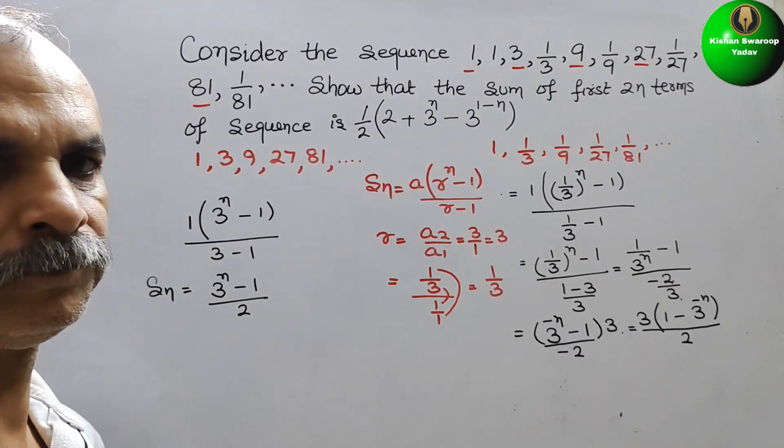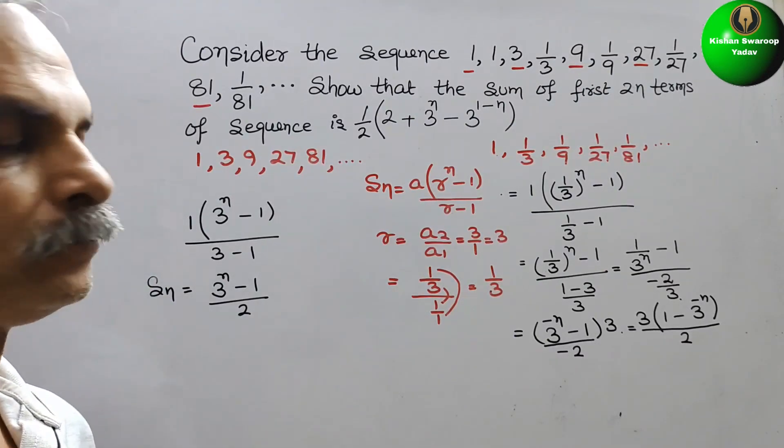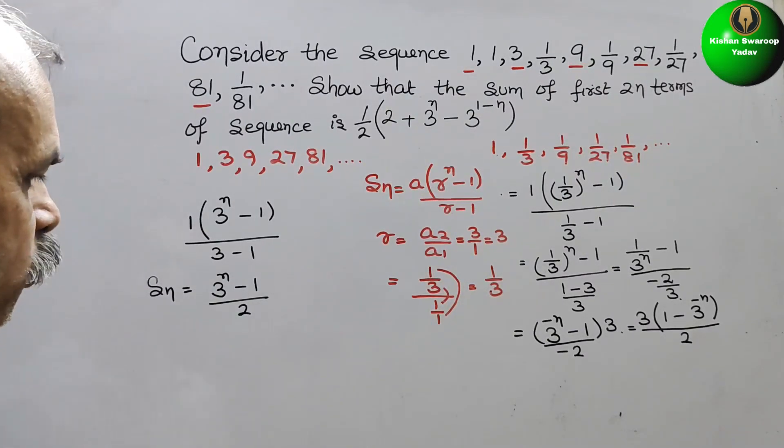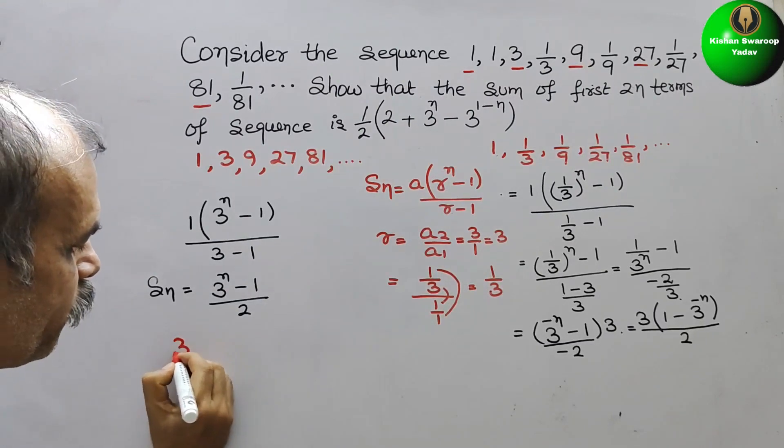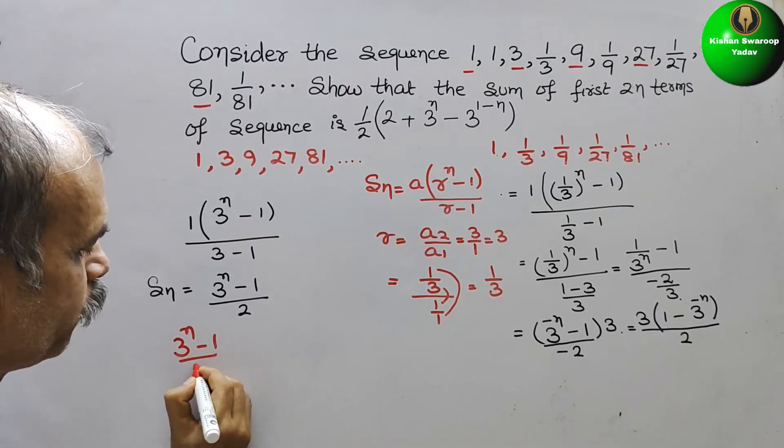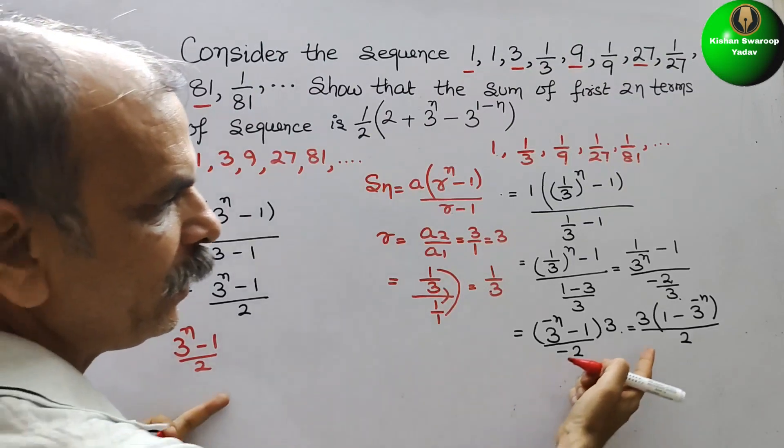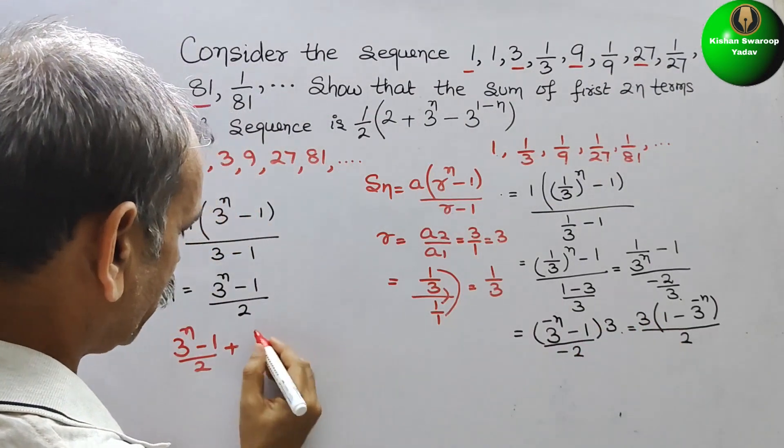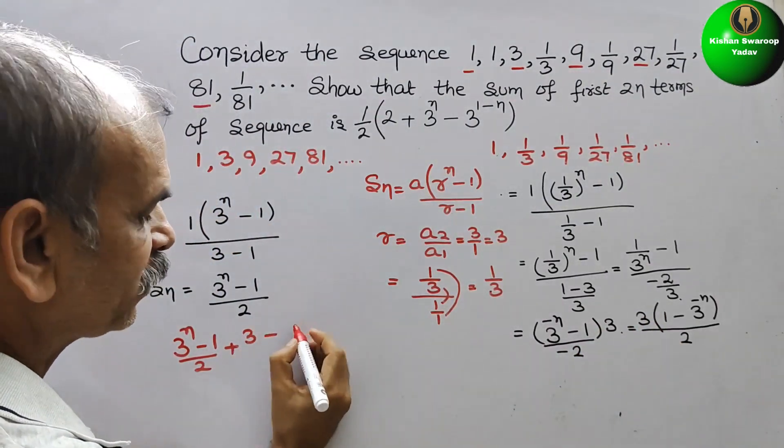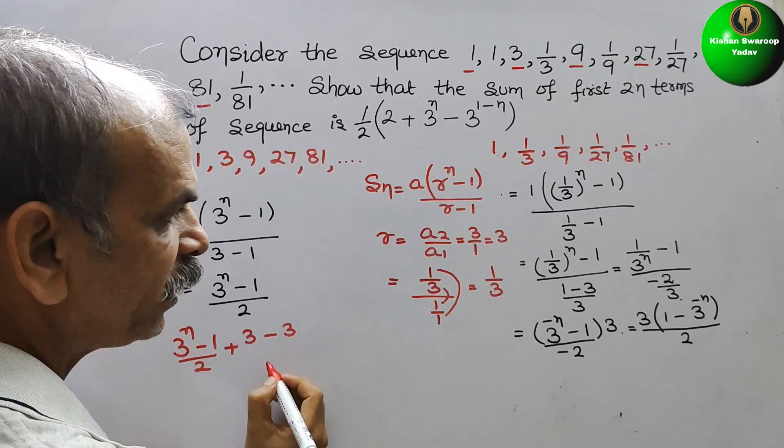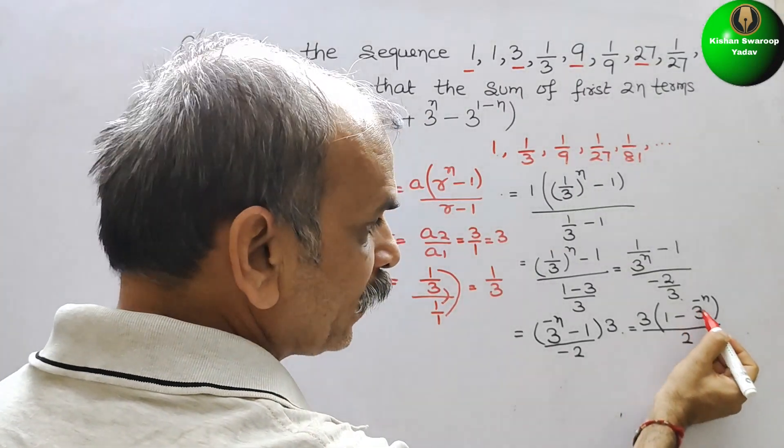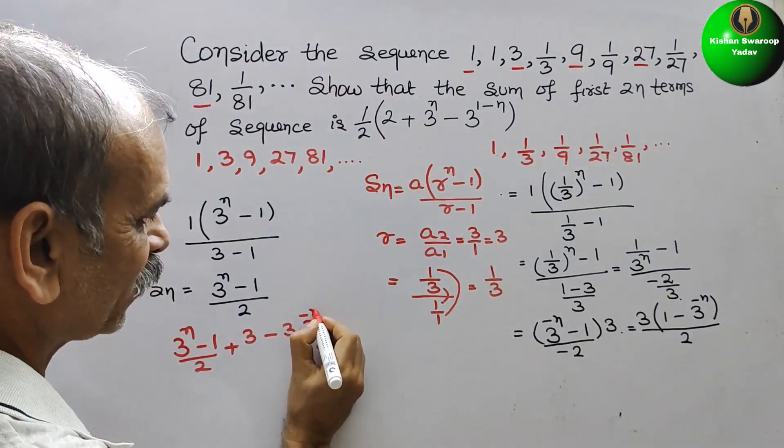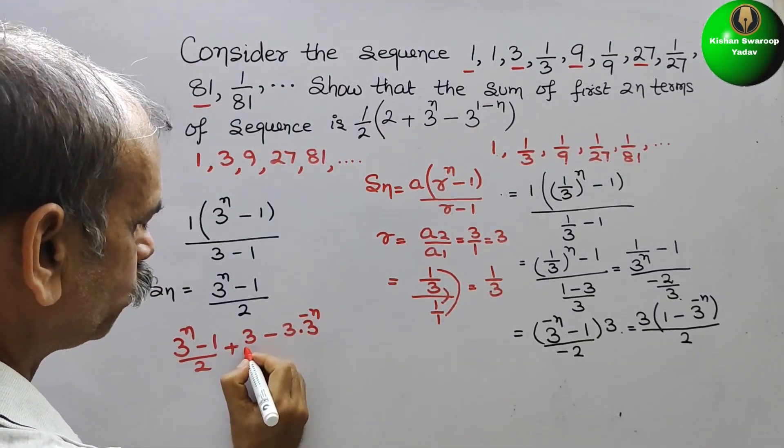Next, we have to add them. If you add them, what will we get? This is first, so we will get (3^n - 1)/2 and this will be same, plus 3 times (1 - 3^(-n))/2. Same.